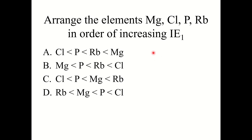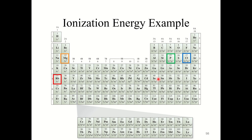Knowledge check: arrange Mg, Cl, P, and Rb in order of increasing IE1. The correct answer is D: Rb has the smallest IE1, followed by magnesium, then phosphorus, then chlorine. Rubidium is closest to the bottom left in the periodic table so it has the smallest ionization energy. Magnesium, phosphorus, and chlorine are all in the same row; magnesium is furthest left, then phosphorus, then chlorine, which has the largest ionization energy.